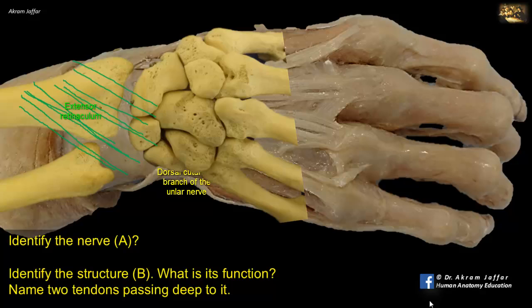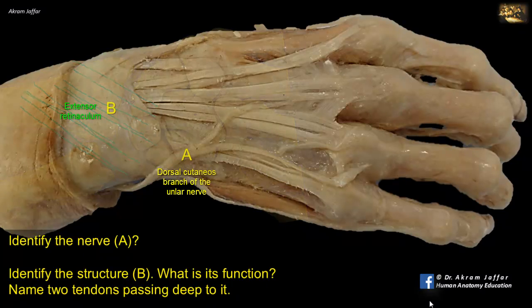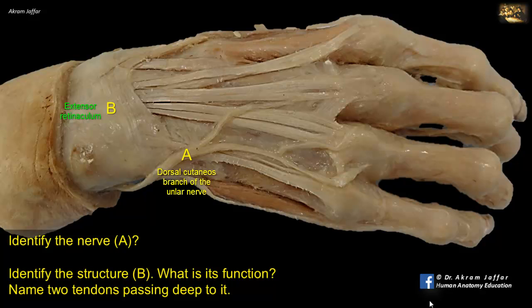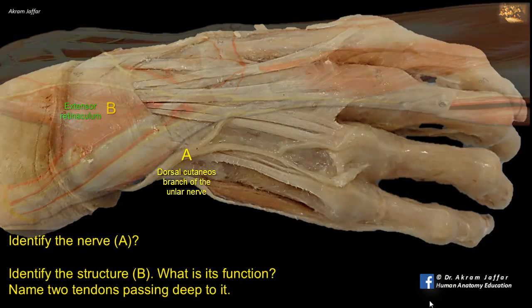The extensor retinaculum holds the extensor tendons in position and prevents their popping up or bow-stringing during extension. From the deep surface of the retinaculum, fibrous septa pass into the bones of the forearm, dividing the extensor tunnel into six compartments.